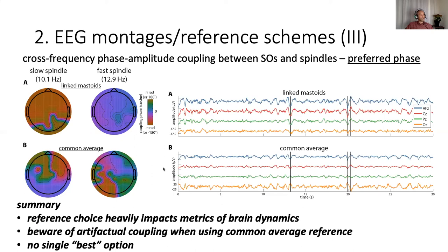So to summarize, the reference choice has a really big impact on metrics of brain dynamics, and especially with the common average reference I would be aware of artifactual coupling. And again, sadly, there's usually not a single best option.